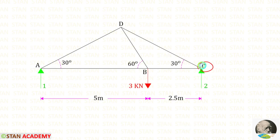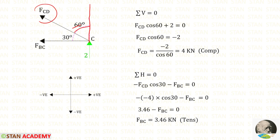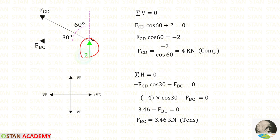Now let us take joint C and find the member forces. In joint C we have member forces in CB and CD, and also the vertical reaction of 2 kilo Newton. We first apply sigma V equals 0 because there will be only one unknown, that is FCD. To make FCD vertical we need 60 degrees, so we multiply FCD with cos 60. When made vertical it acts upwards, so it is positive. The reaction is also positive. Finally FCD gives a negative value, meaning it is compressive.